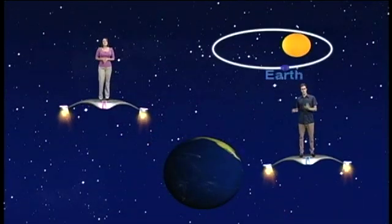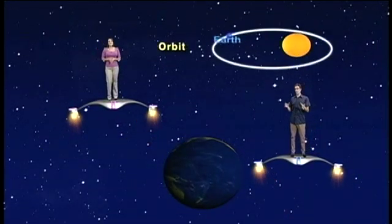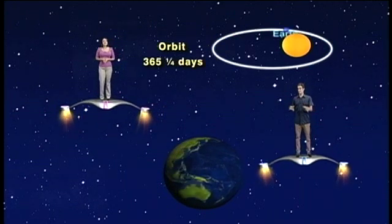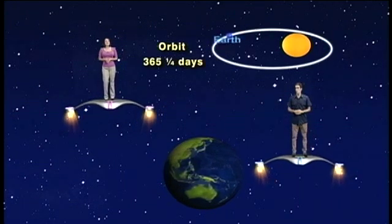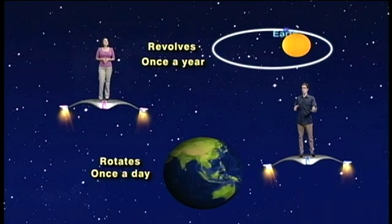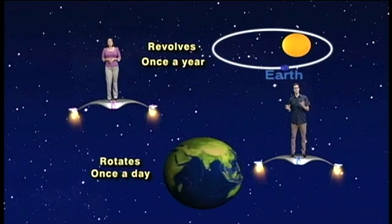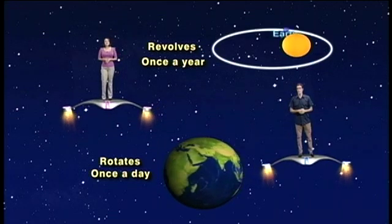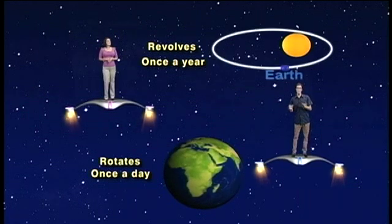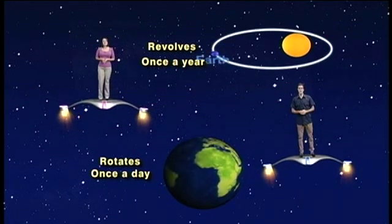And our Earth has a second motion. It also orbits the sun and completes a journey around the sun once every 365 and a quarter days. So it rotates once a day and revolves about the sun once each year. And because of this revolution, our Earth changes its position with respect to the stars a little bit each night, so we see different stars at different times of the year.